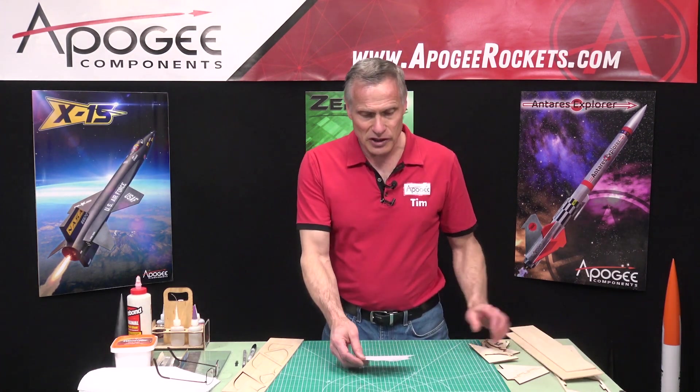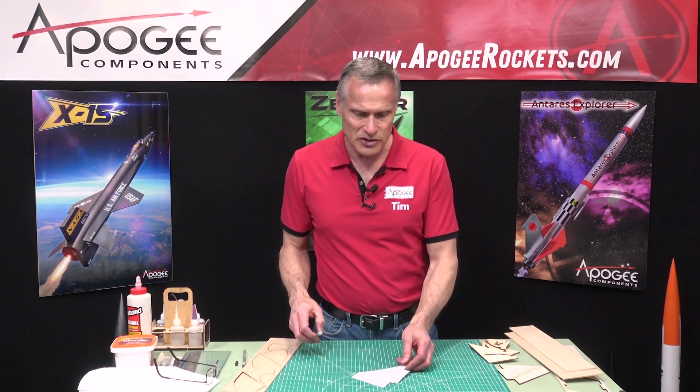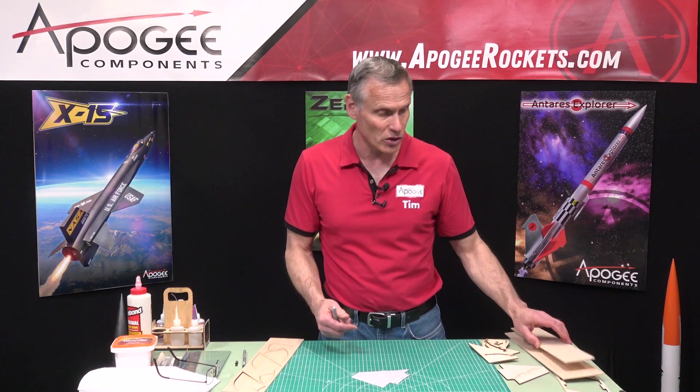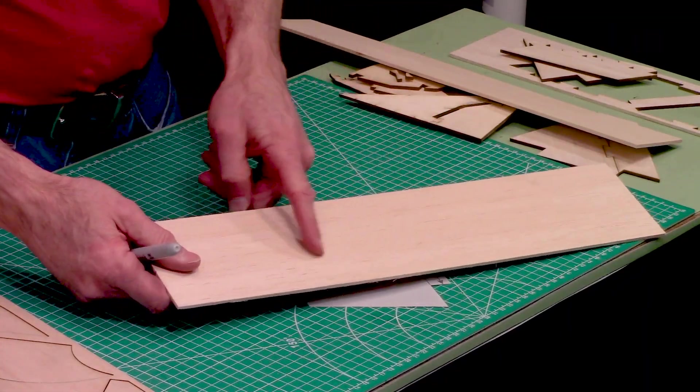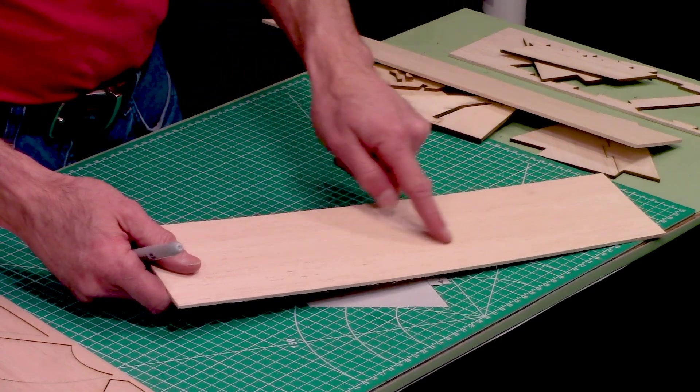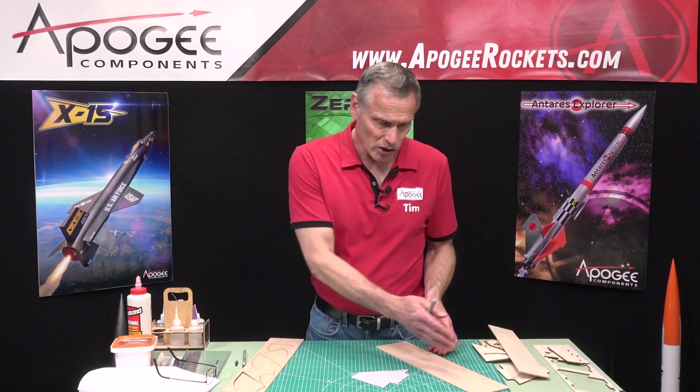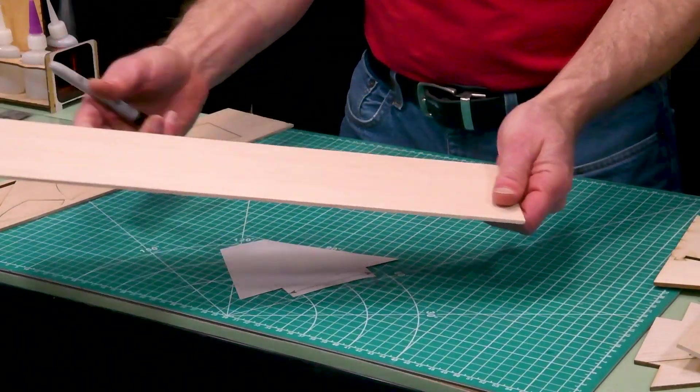So the first thing you need to do when you design a fin like this is to decide which way the grain direction of the wood is going to go. The grain direction, like you see on this piece of wood here, are the fibers of the wood. The wood is stronger along the grain.